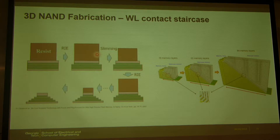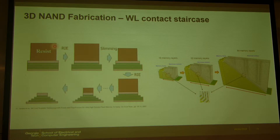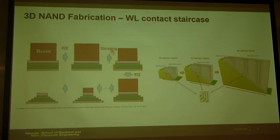So we use this photoresist slimming process. First, deposit a very thick photoresist and then etch the layer and then slim by the isotropic etch. The height and width become narrow, and then etch again. By repeating this we can make the stair shape. This is the way to form the contact.